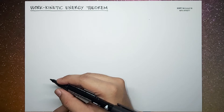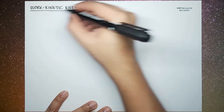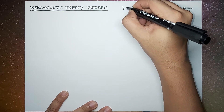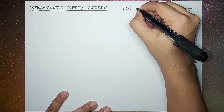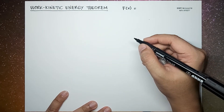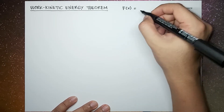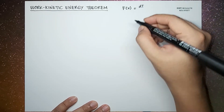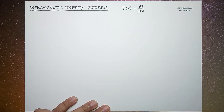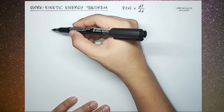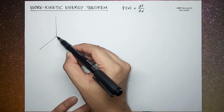In the last video, we talked about the relationship between the force exerted on a particle and its kinetic energy. We found out that the force exerted on the particle — specifically the net force acting on the particle — is equal to the total derivative of the kinetic energy with respect to x.